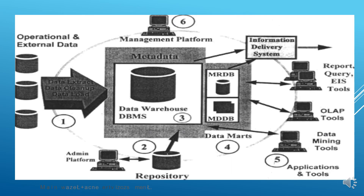Looking at the architecture diagram, we have different sources including operational and external data such as HR, sales, or product data. Data is extracted from these different sources, cleaned, and then loaded into the data warehouse, which is the central repository. The data is loaded in different forms and structures in an organized way.